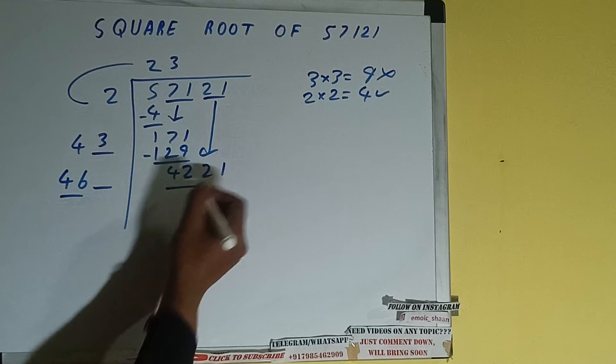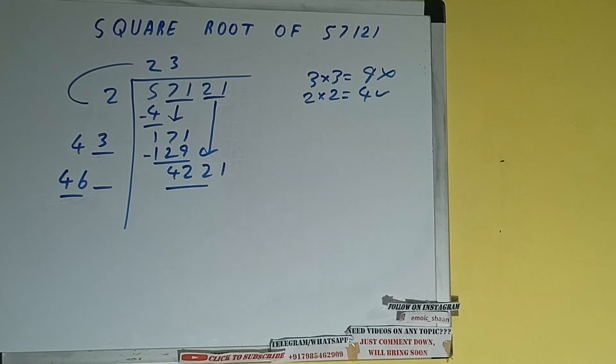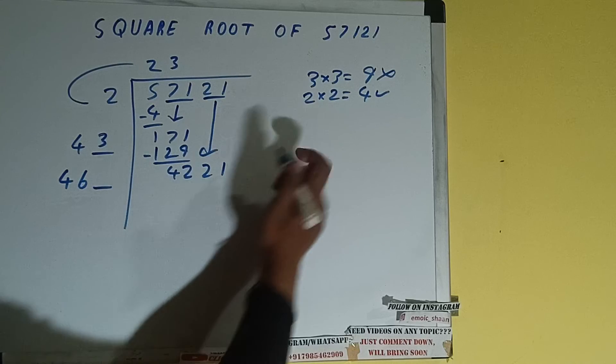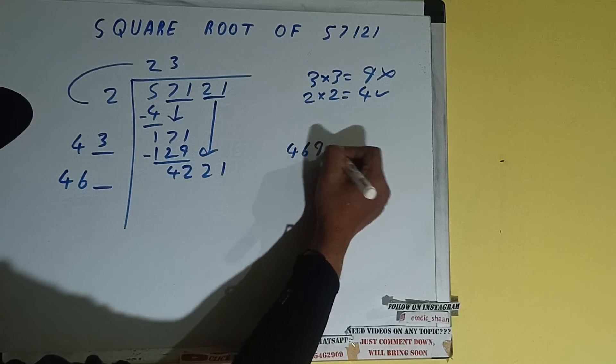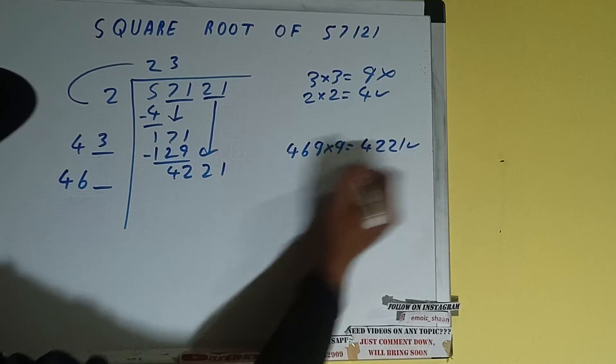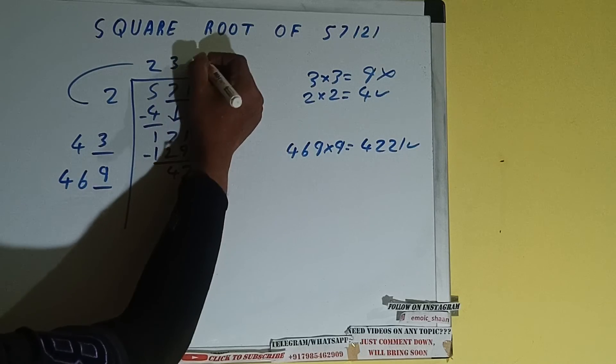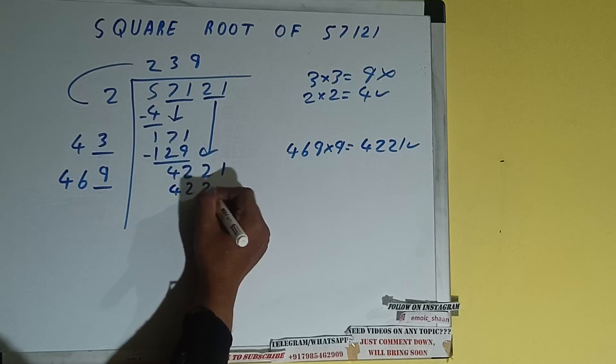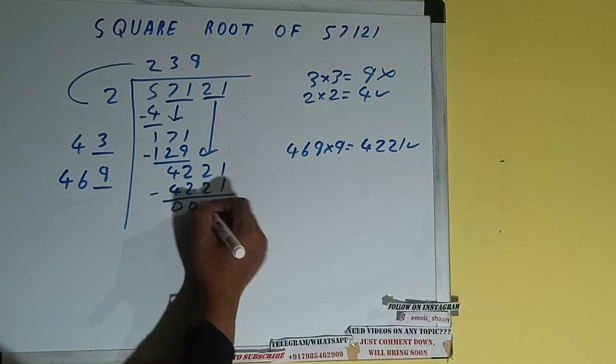Now compare this 46 and 422. So 46 times 9 is 414, so we can try 9 times. 469 into 9 we can try and we'll be having 4221 which is good to take. So 9 here and 9 here, 4221 subtract, 0 will be left.